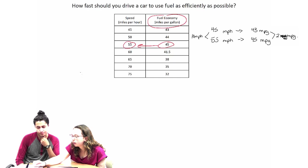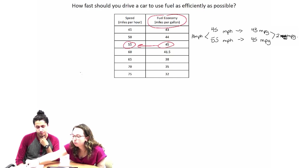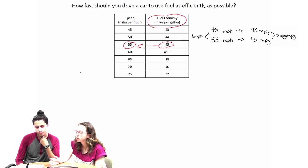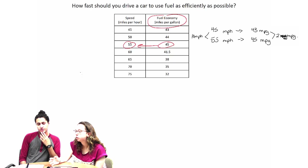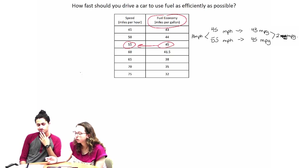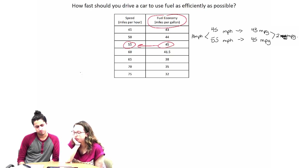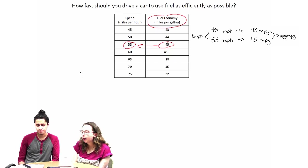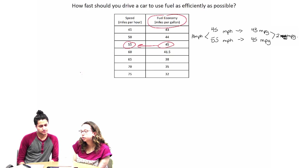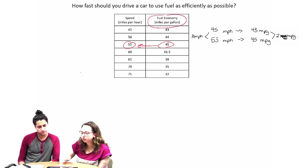But I think, at least how I'm going to see the problem, is that this would still be more efficient than 45, even if it's only by two more miles per gallon. Oh. I mean, we could try to draw a graph using the points we have and see if that makes a difference.